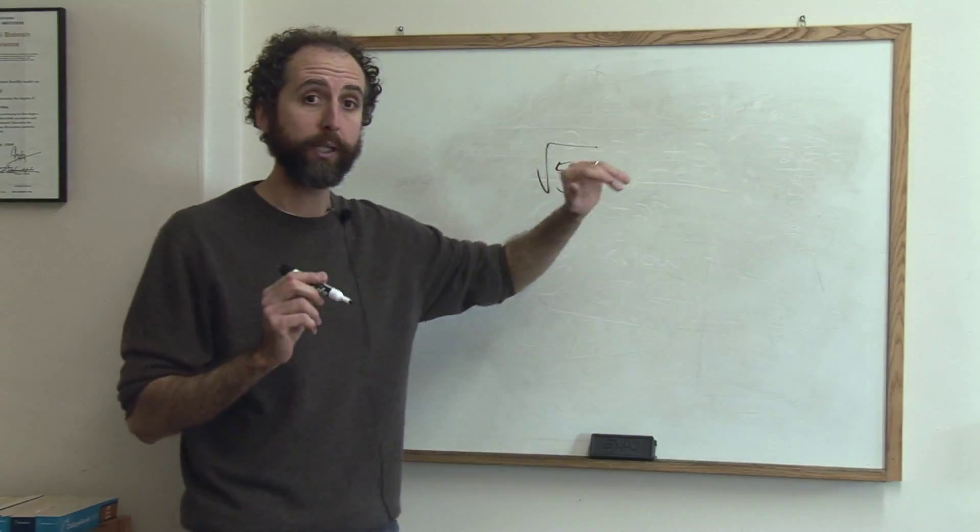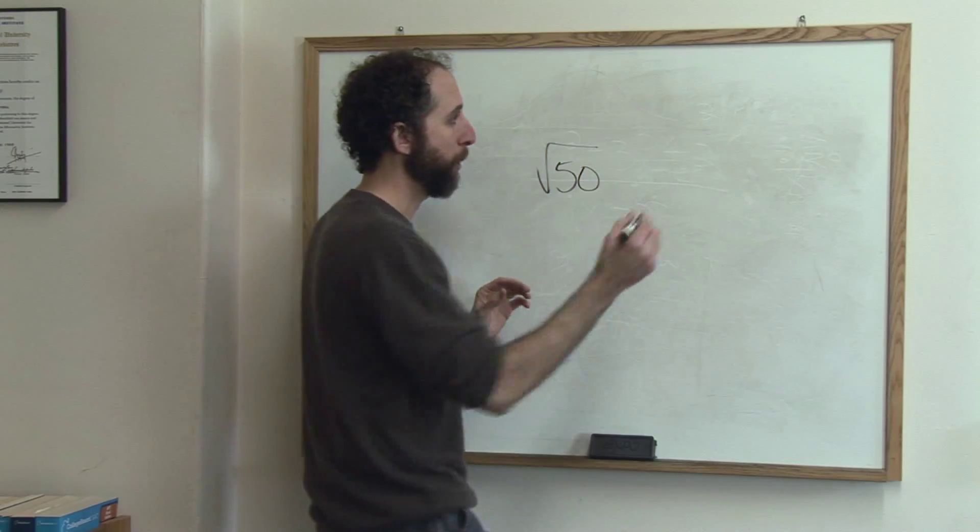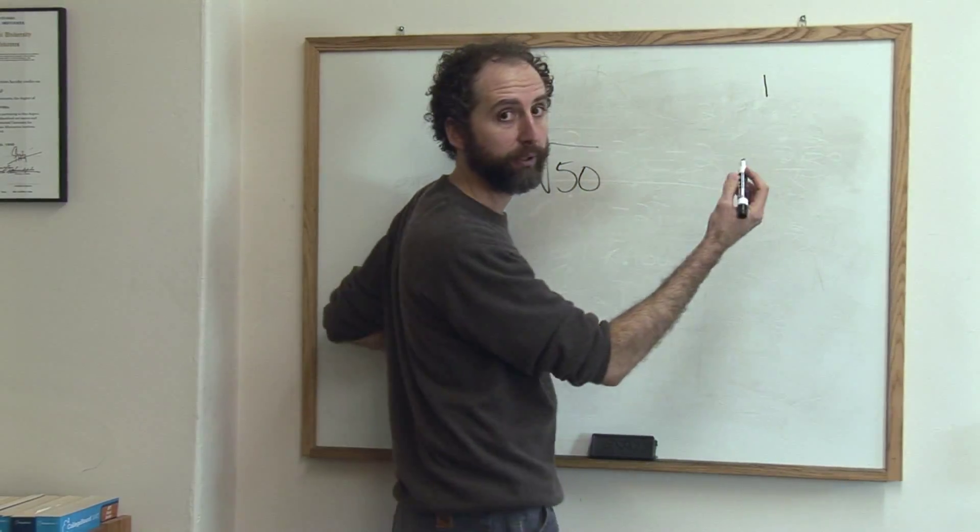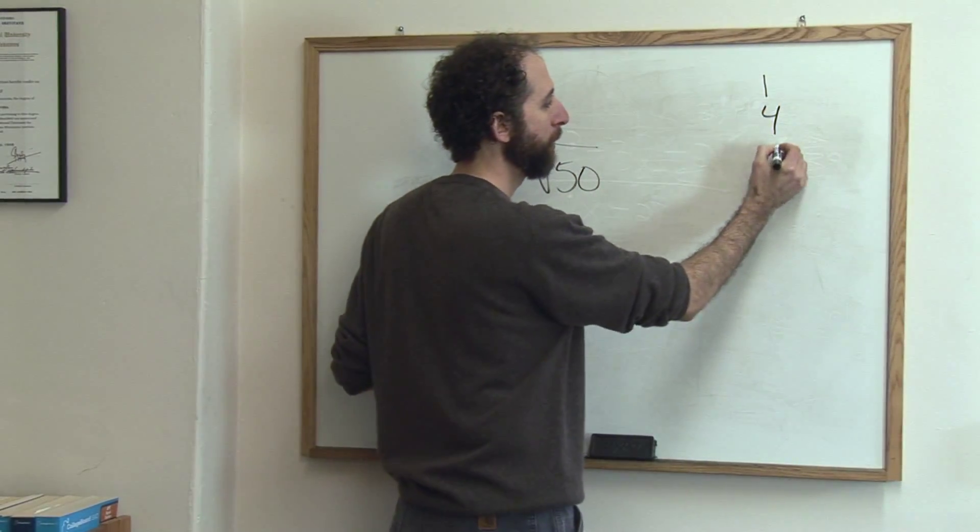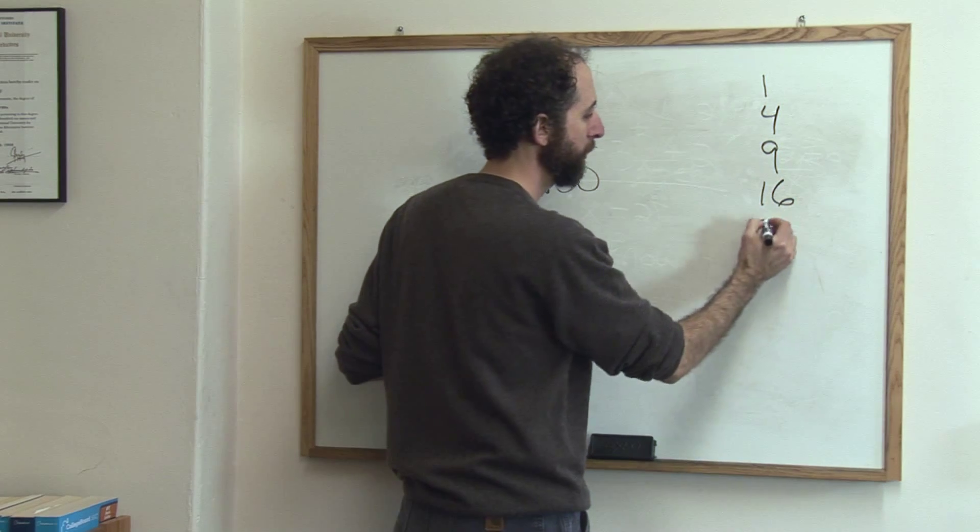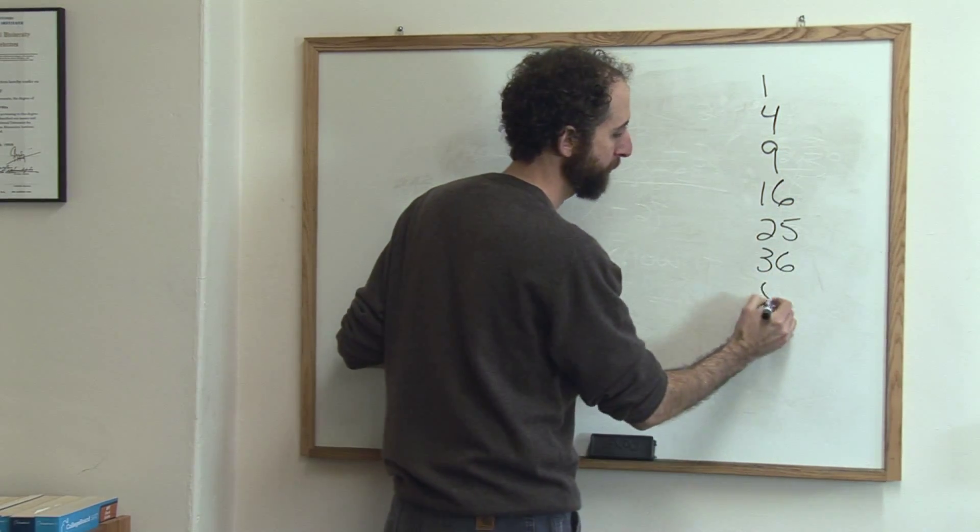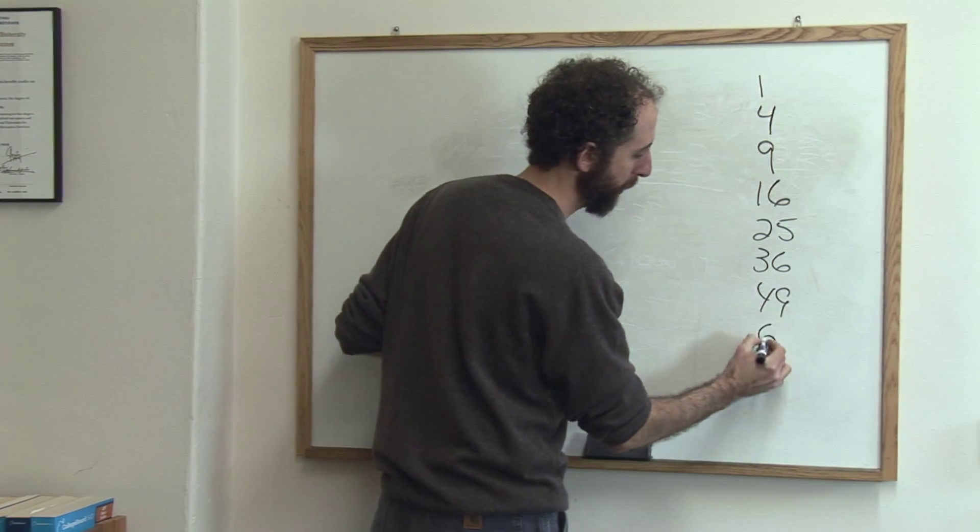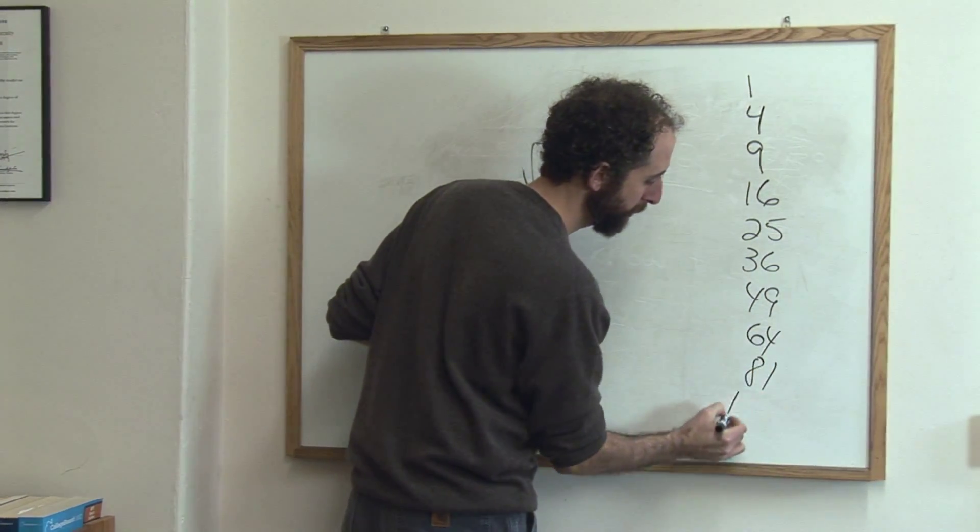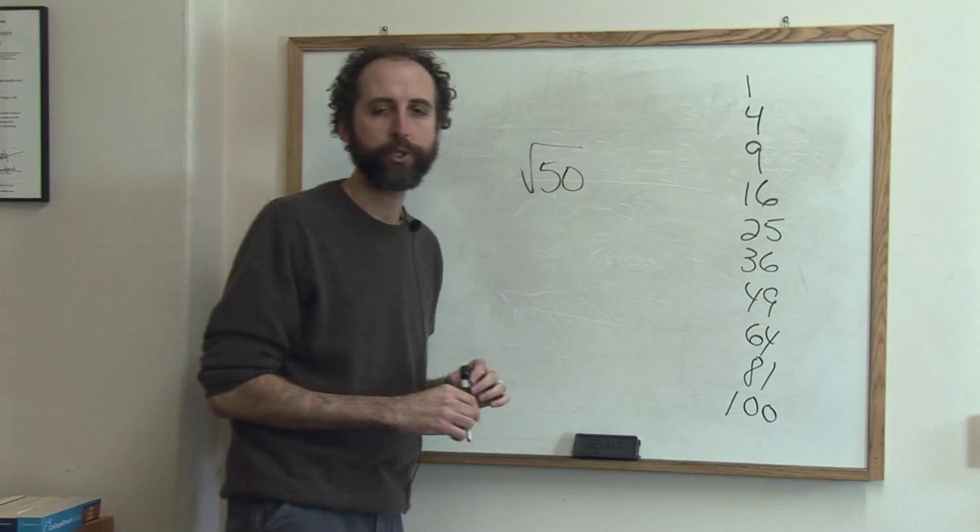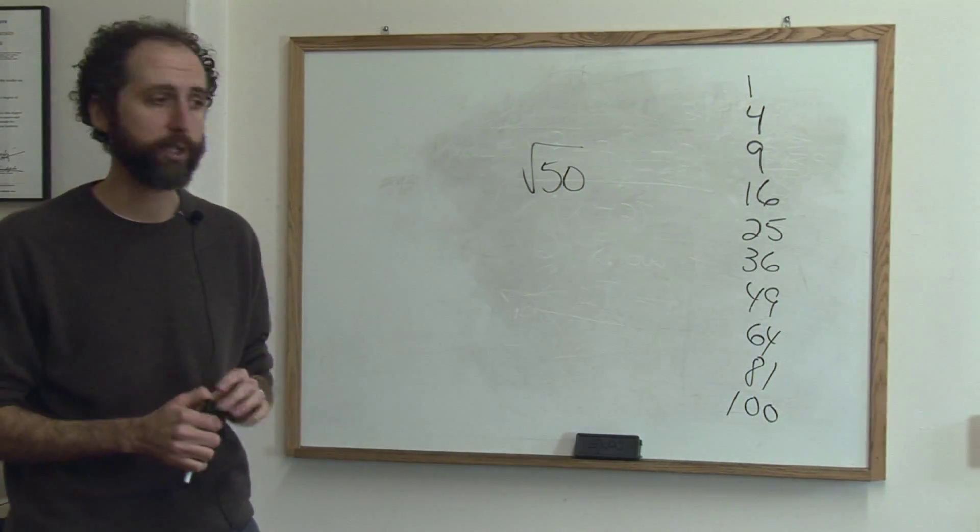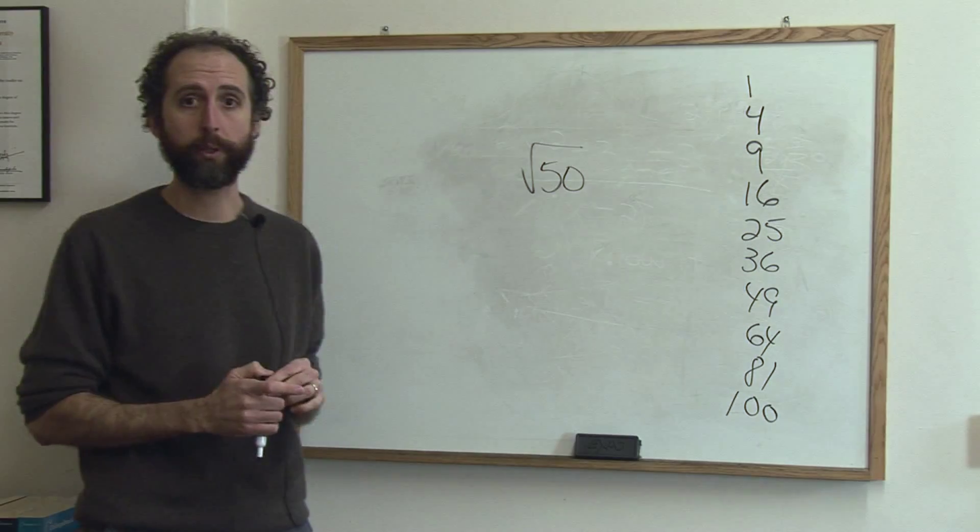So one squared is one, that really doesn't matter to us. Two squared is four, three squared, four squared, five squared, six squared, seven squared, eight squared, nine squared, ten squared. That's pretty much what you need. If you're in an advanced class or an honors class, you may need a couple more after ten, but that's usually what you need.